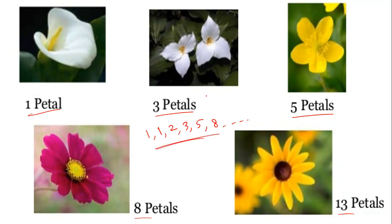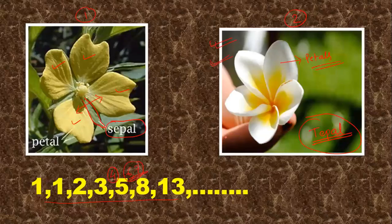You cannot find a flower of the tepal type with 4 petals. Flowers always maintain the Fibonacci sequence. Mathematics is everywhere.